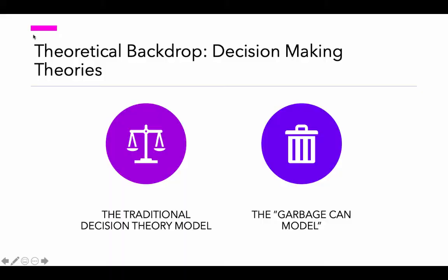So let's jump in. To better understand the theory we're studying this week, I want to put it into broader context. What is the theoretical backdrop against which this theory can be placed and ultimately distinguished? Here we have to understand the difference between traditional decision theory models and what we'll call the garbage can models of decision making.